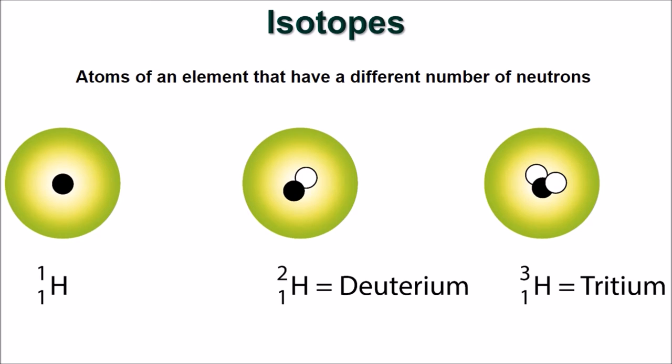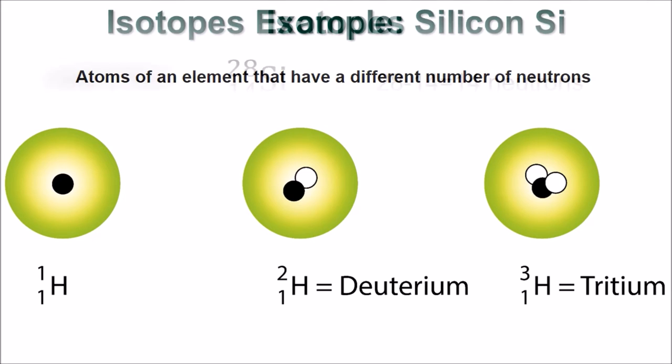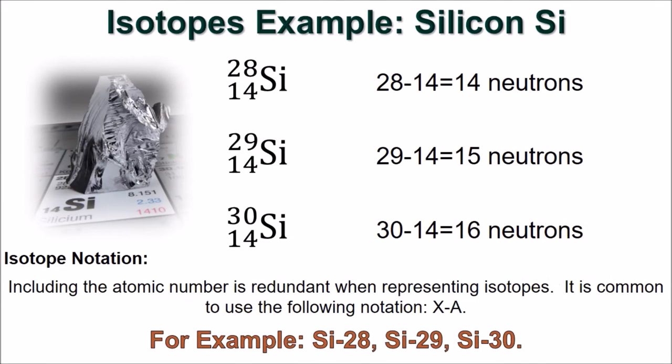So, the isotope of hydrogen with one neutron and one proton is called deuterium, and the isotope with two neutrons and one proton is called tritium. Silicon has the chemical symbol SI and 14 protons.